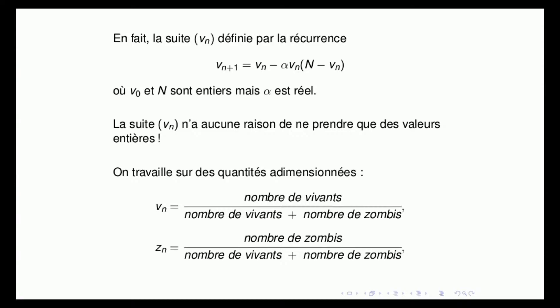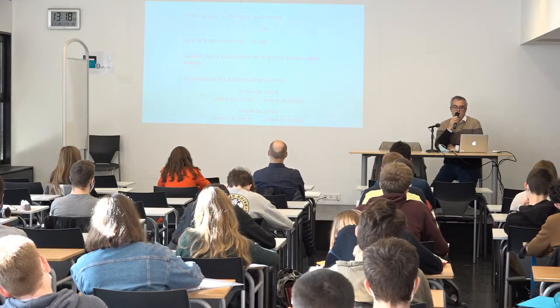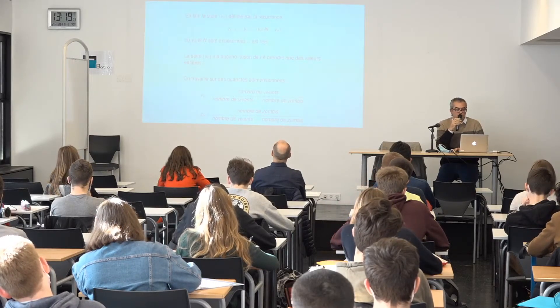Pour éviter ce problème, on va faire ce que font les physiciens : travailler avec des quantités adimensionnées. On va diviser chaque population ZN et VN par la population totale N, ce qui fait qu'on travaille non plus sur des entiers, mais avec des réels dès le début. Notre relation de récurrence laisse stable l'ensemble des réels — un réel associe un réel et on a une suite de réels. Une fois qu'on a fait ça, on peut faire des simulations avec Python.